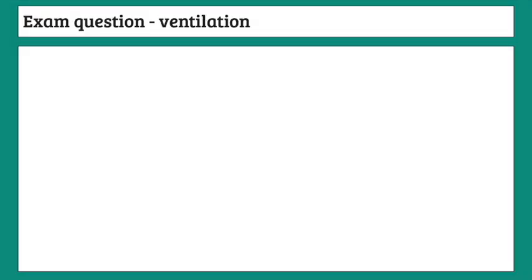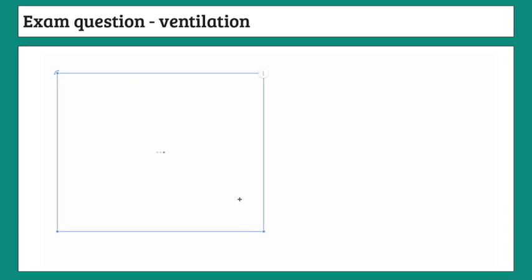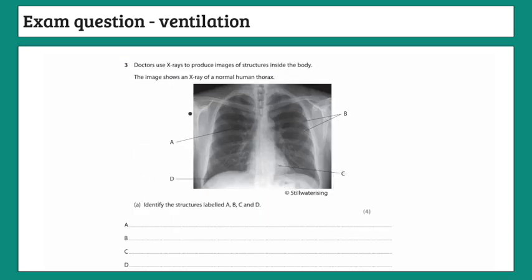Being asked to explain the ventilation system is a pretty common exam question, so make sure you know the mechanism of ventilation — both inhalation and exhalation. Here's a past paper question. For labeling: A is the right lung (images are mirrored), B is the ribcage, C is the heart, and D is the diaphragm.